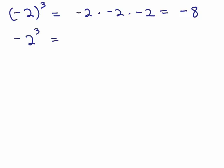Now, in the second one, what's the base? The base in the second one is just 2. It's not negative 2. So this means negative 1 times 2 times 2 times 2. Both of them happen to simplify to be negative 8, but they mean something very different.